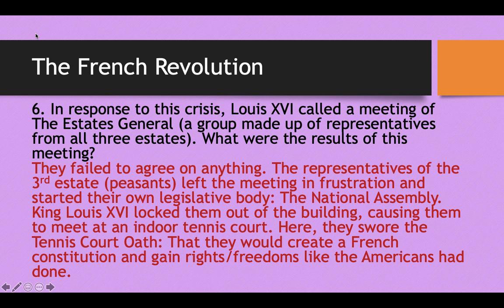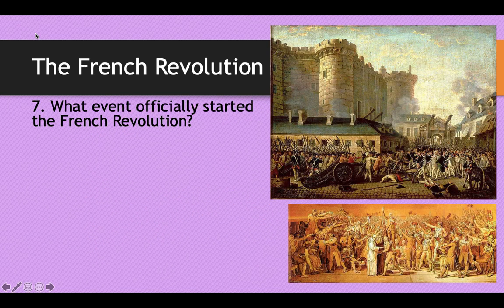The Tennis Court Oath is when the National Assembly — this group of peasants who walked out of the Estates General — swore an oath that they would create a French constitution, even if it killed them. They said they would not rest until they gained the rights and freedoms that the Americans have.